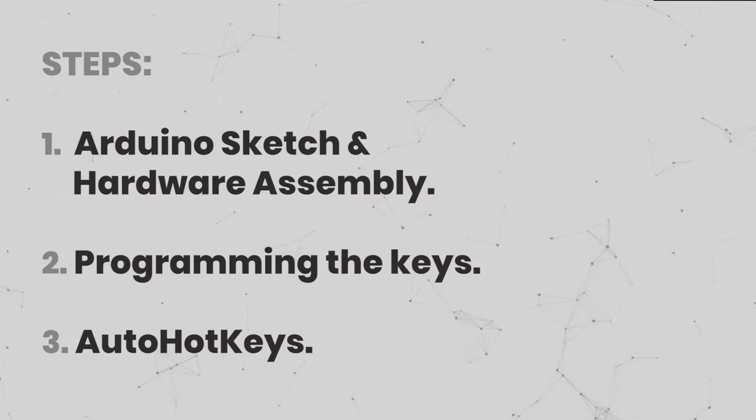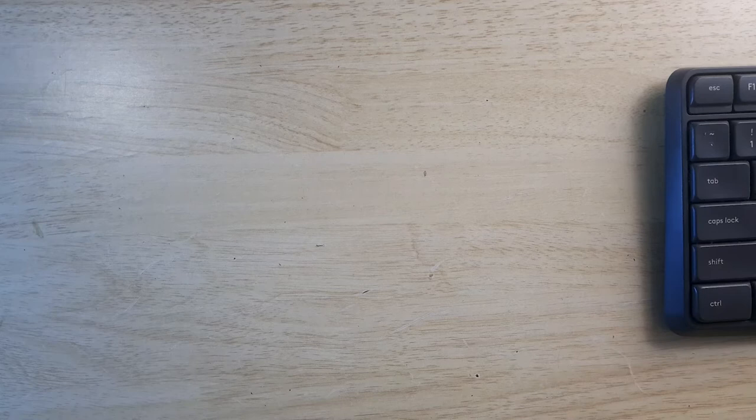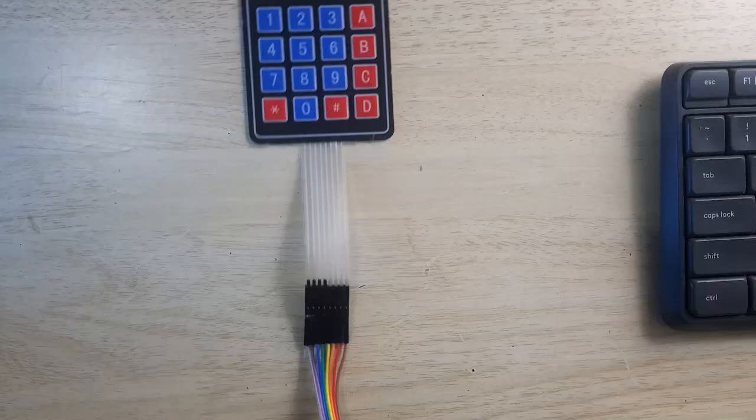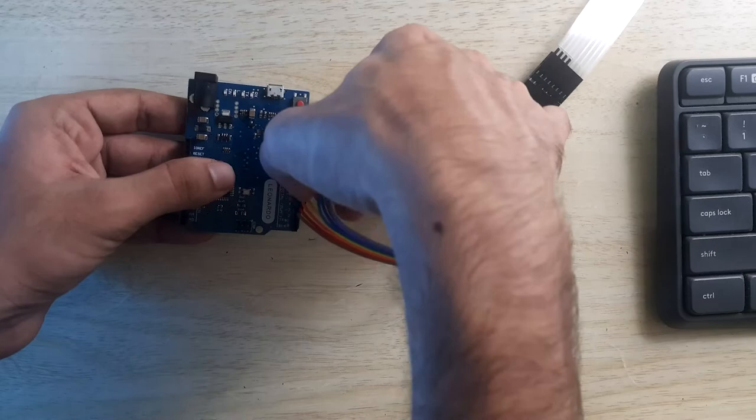If you wish to come back at any time or skip ahead, you can find the timestamps for each step in the description. Let's start with step one: Arduino sketch and hardware assembly. To trigger the commands we'll use a keypad, and to send those commands to the PC we'll use an Arduino board. I've kept links for these exact components in the description. Let's attach these two together using jumper cables.